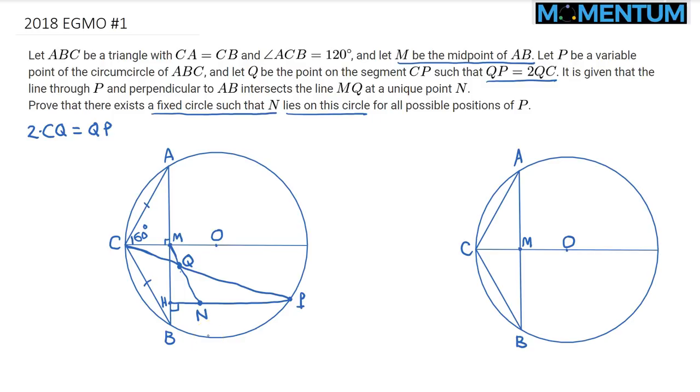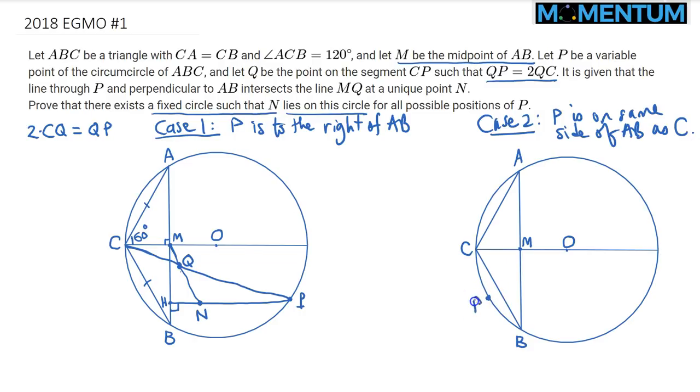We need to prove that there exists a fixed circle such that N lies on this circle for all positions of P. P is anywhere on the circumcircle. The reason I have two different pictures here is that I would like to consider two cases. The first case is where C and P are on two sides of AB, and the other case is where P is on same side of AB as C is.